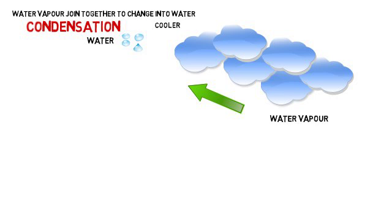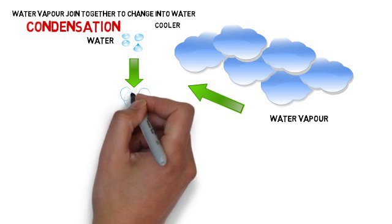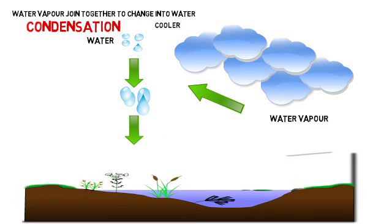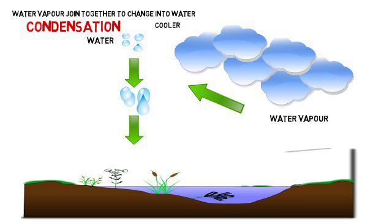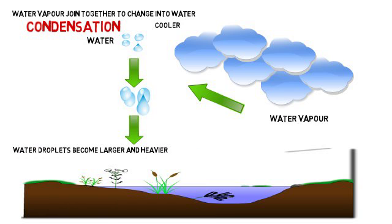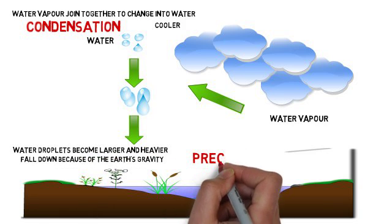In the sky, the water droplets combine together to form bigger and heavier water droplets. These water droplets then start to fall down because of the earth's gravity. So when the water droplets become larger and heavier, they fall down, and this process is called precipitation.